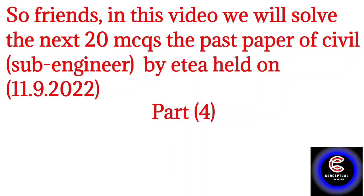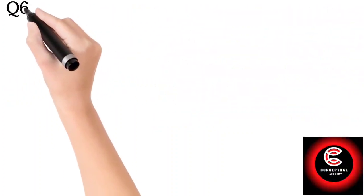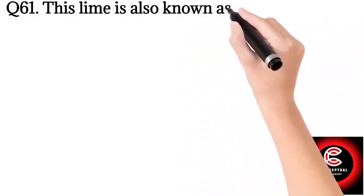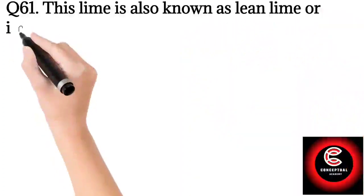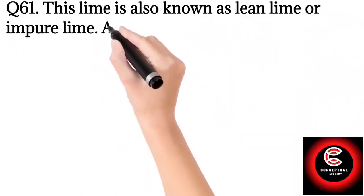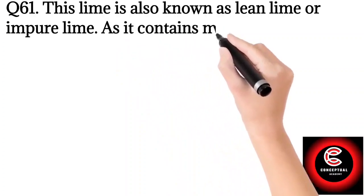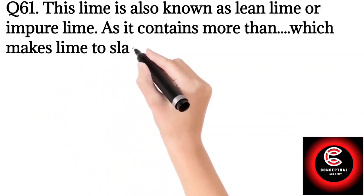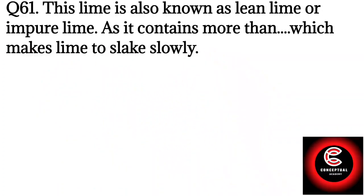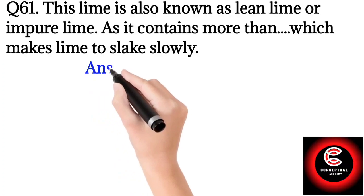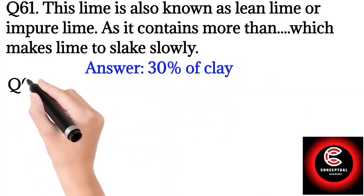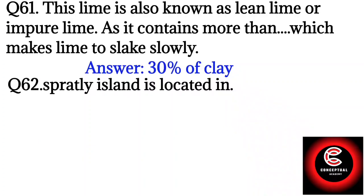In this video we start from question 61 because we already solved 60 MCQs in the previous last three parts. Question number 61: This lime is also known as lean lime or impure lime, as it contains more than which makes lime to slake slowly. So the answer is 30% of clay.